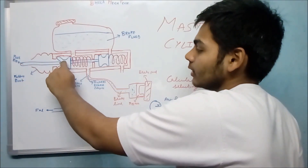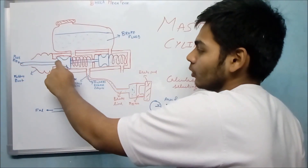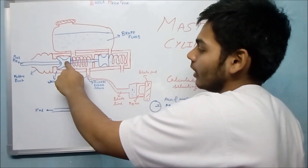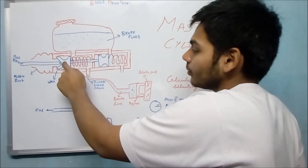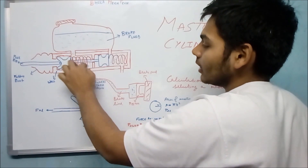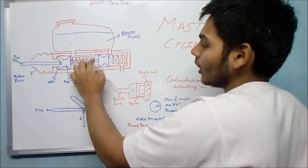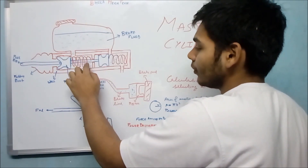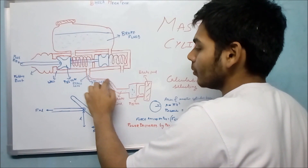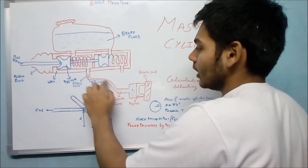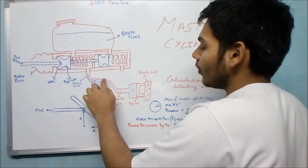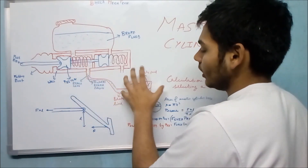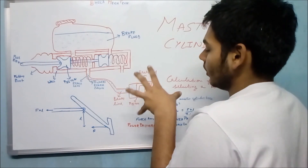The force F into L will transmit through the push rod and be applied on the piston. Pressure will then be created inside the fluid. Due to this pressure, the fluid will try to escape through the brake lines and travel from the brake lines to the caliper.